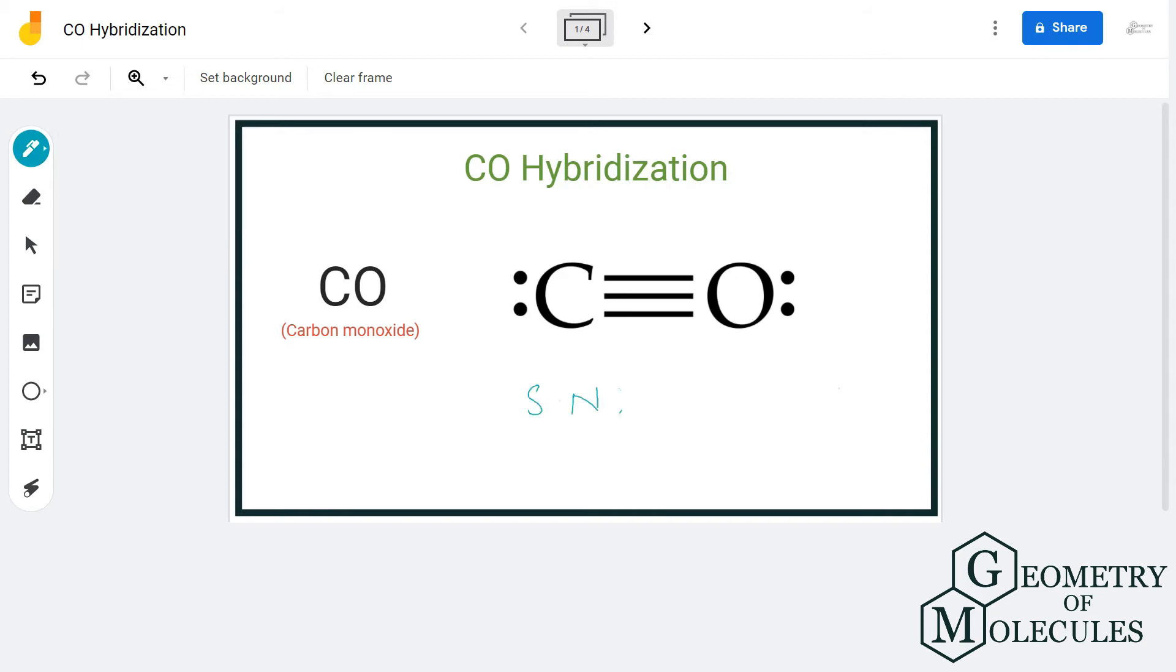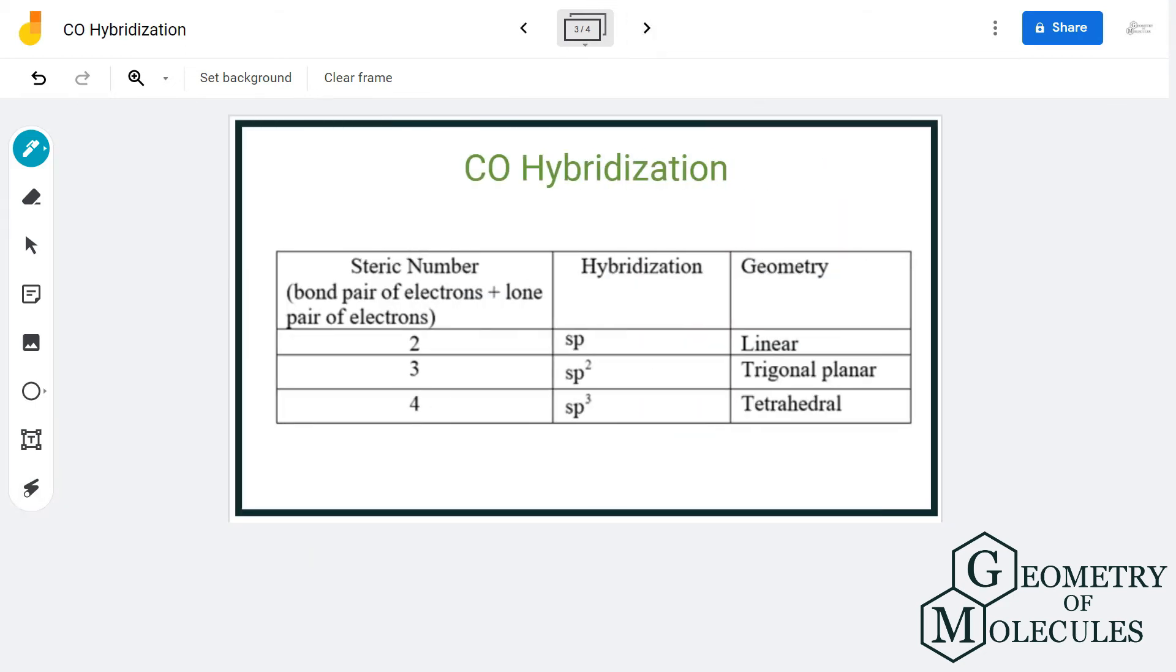For carbon, we have one lone pair of electrons and there is one oxygen atom attached to it, so the steric number is two. If you look at this table which helps us know the hybridization just by looking at the steric number, molecules that have steric number two have sp hybridization.